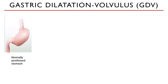So what is GDV? GDV can also be called bloat. This is the over-distention of the stomach with either gas, fluid, or ingesta — or all of those combined — with the rotation of the stomach on its mesenteric axis. If you're looking at the patient from behind, the direction of the twisting is clockwise.